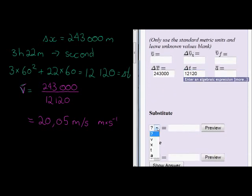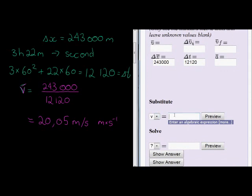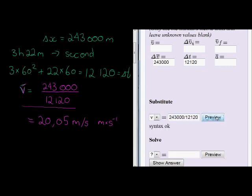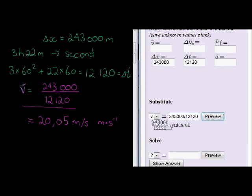Finally we need to substitute. We know we're working out velocity, and in the substitution step we have to write this whole thing out. That's where you're getting your marks from for this question. 243,000 divided by 12,120. Always click on preview. Just confirm that it is indeed correct. That does look okay.